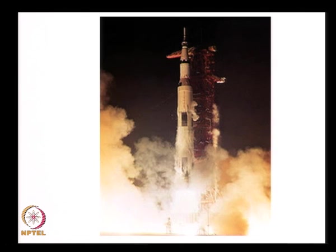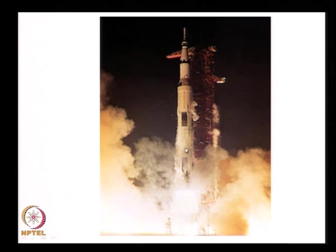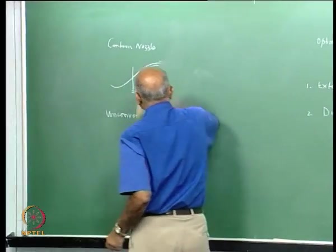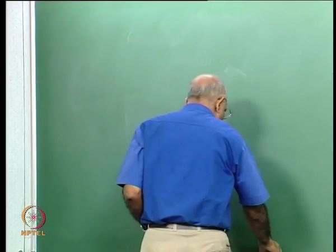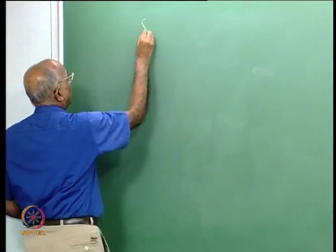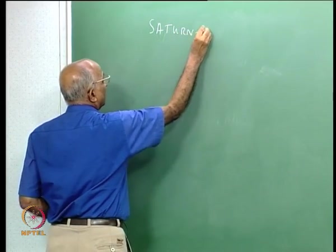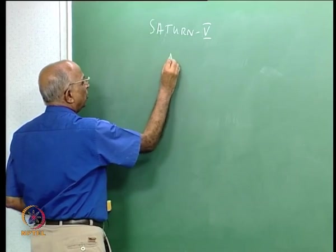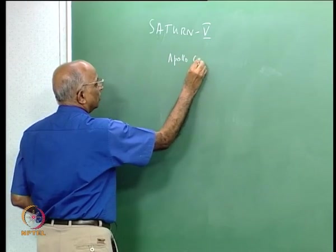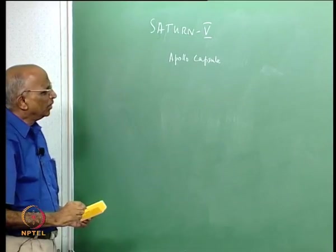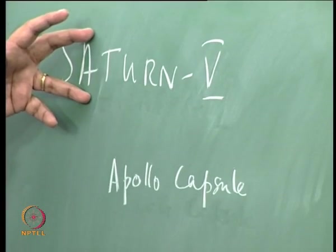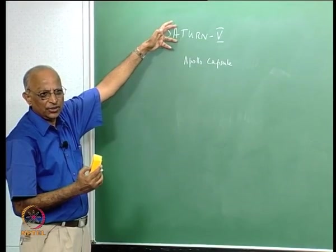With that we close the portion on nozzles, but it will be incomplete without one or two problems. In the next 20–25 minutes I will work through a problem related to the Saturn V vehicle — the launch vehicle that put the Apollo capsule carrying three men to the moon. This is by far the most powerful rocket ever made in the history of rockets.